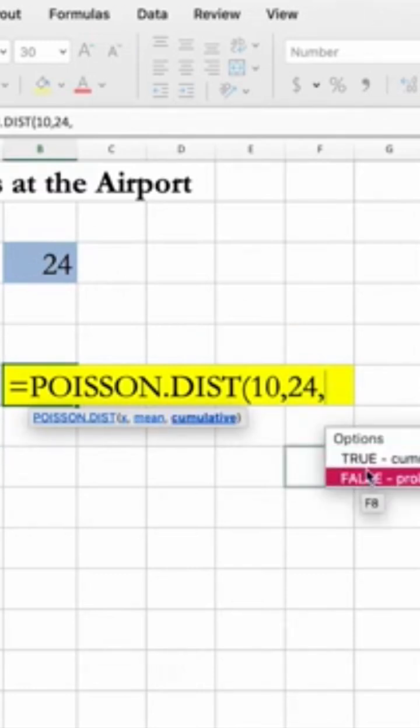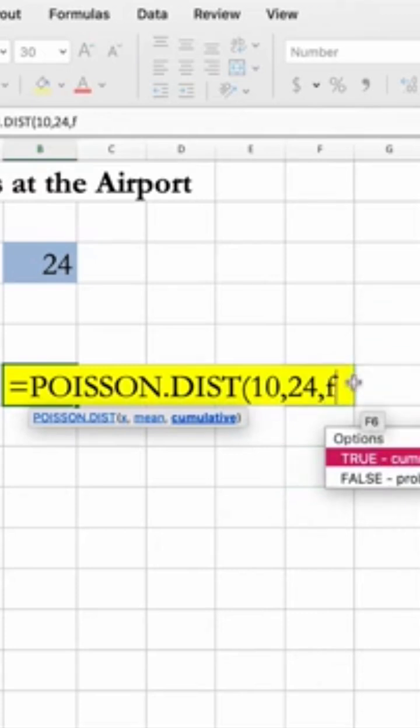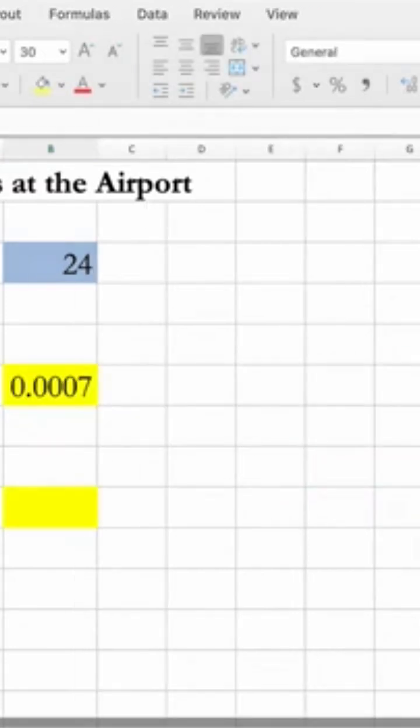Here since we're looking for exactly 10 from the two choices given, we're going to select false. Our second question is asking us to find the probability of more than or equal to five customers arriving at the airport.